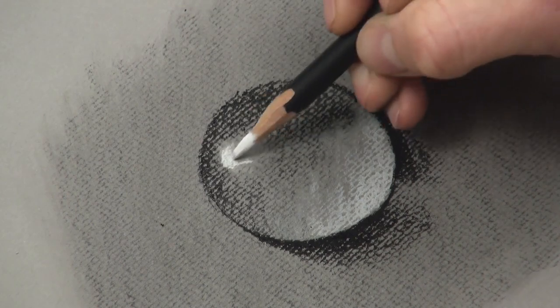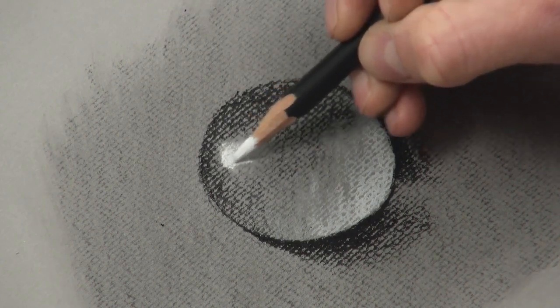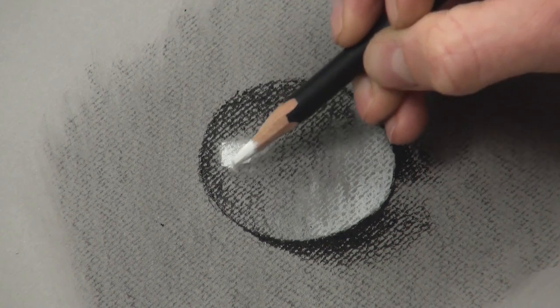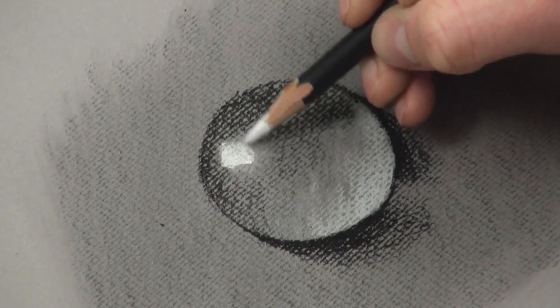So this edge is a soft edge whereas this is a sharp line. And we're going with some dark value around there just to increase the definition and the contrast between those two.